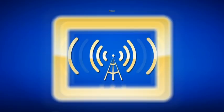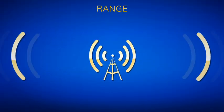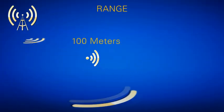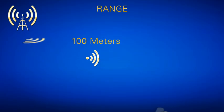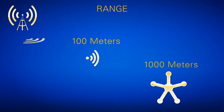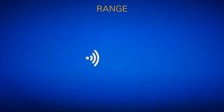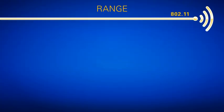The third characteristic to consider is range. Typically, with line of sight, Wi-Fi can be accessed up to 100 meters, while ZigBee can reach 1,000 meters. You should also know about network topologies when considering your application's range.